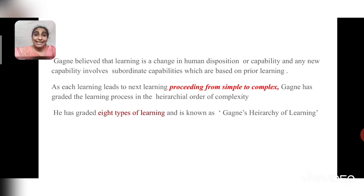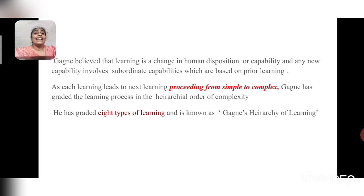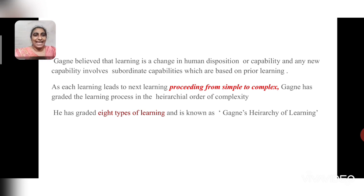According to Gagne, learning is a change in human disposition or capability, and any new capability involves the subordinate capabilities which are based on prior learning. That means whatever you teach your student, he should have a prerequisite of what is to be taught. So he should have a basic understanding of that particular capability.